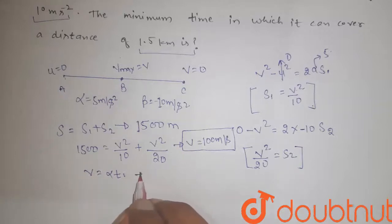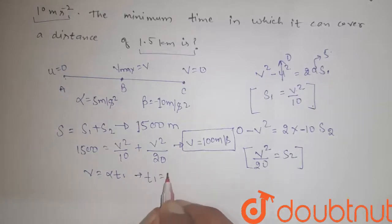Now, V is equal to alpha T1. From here, we get T1, that is V = 100 divided by alpha = 5, that is equal to 20 seconds.